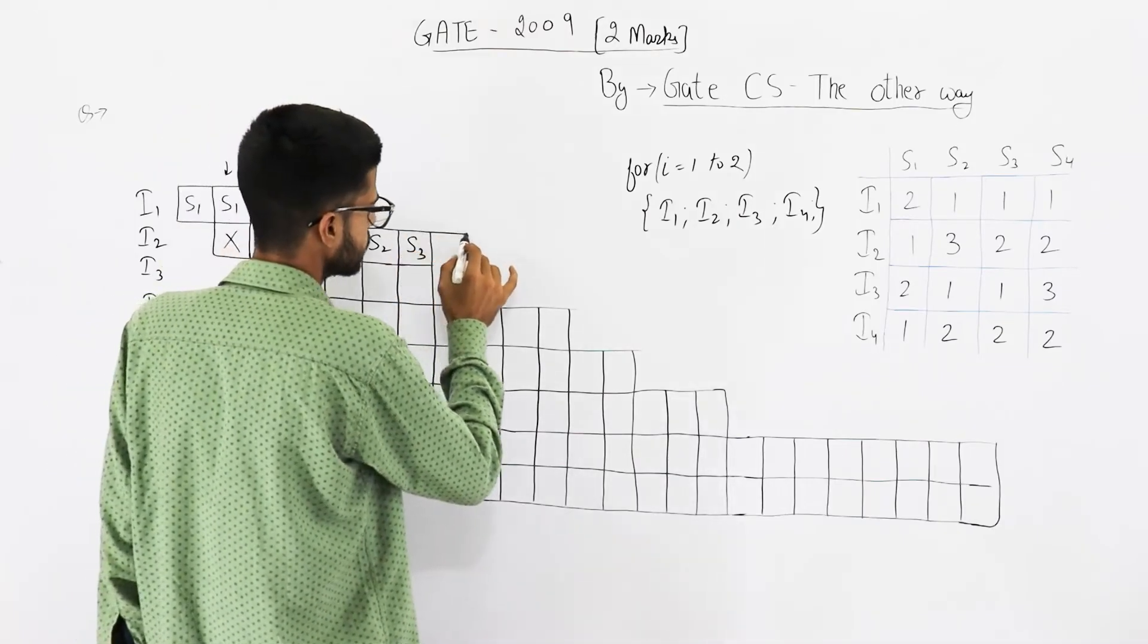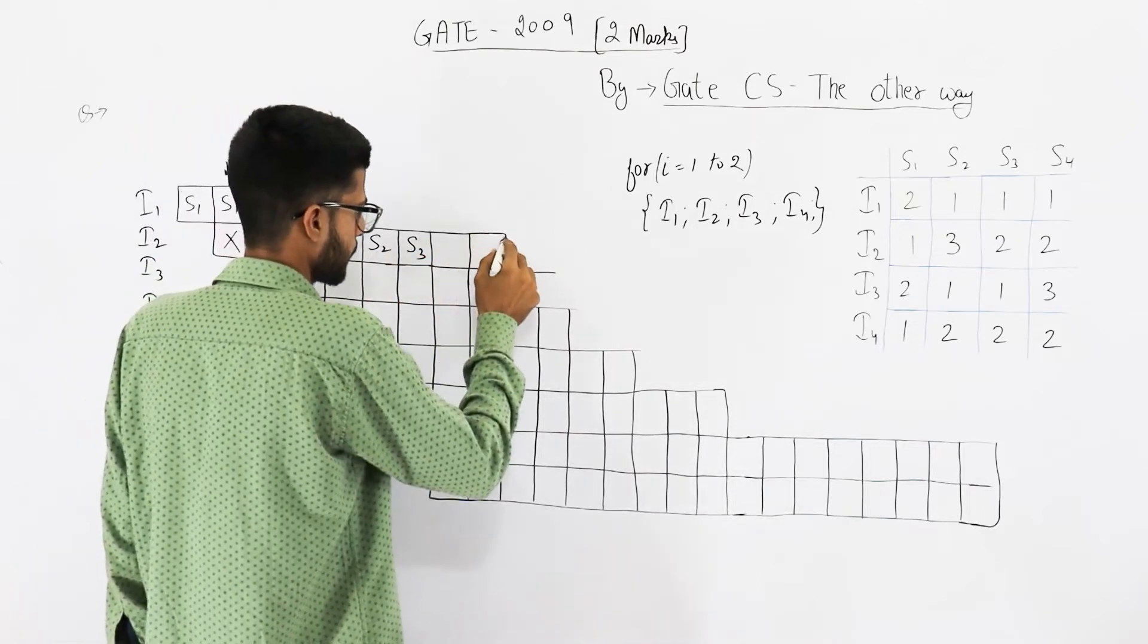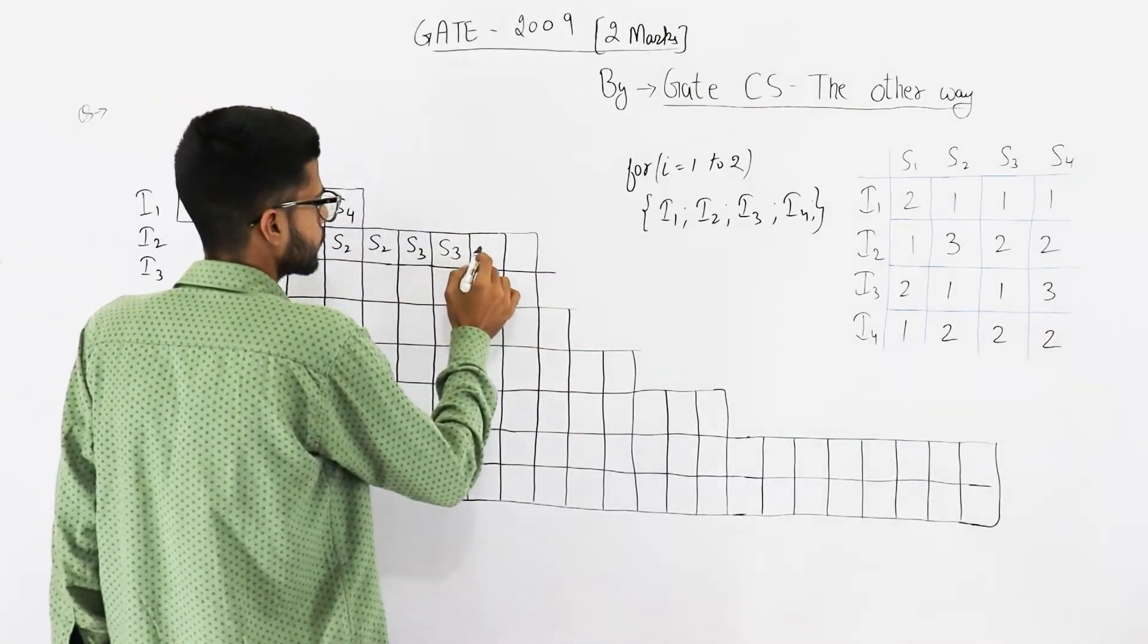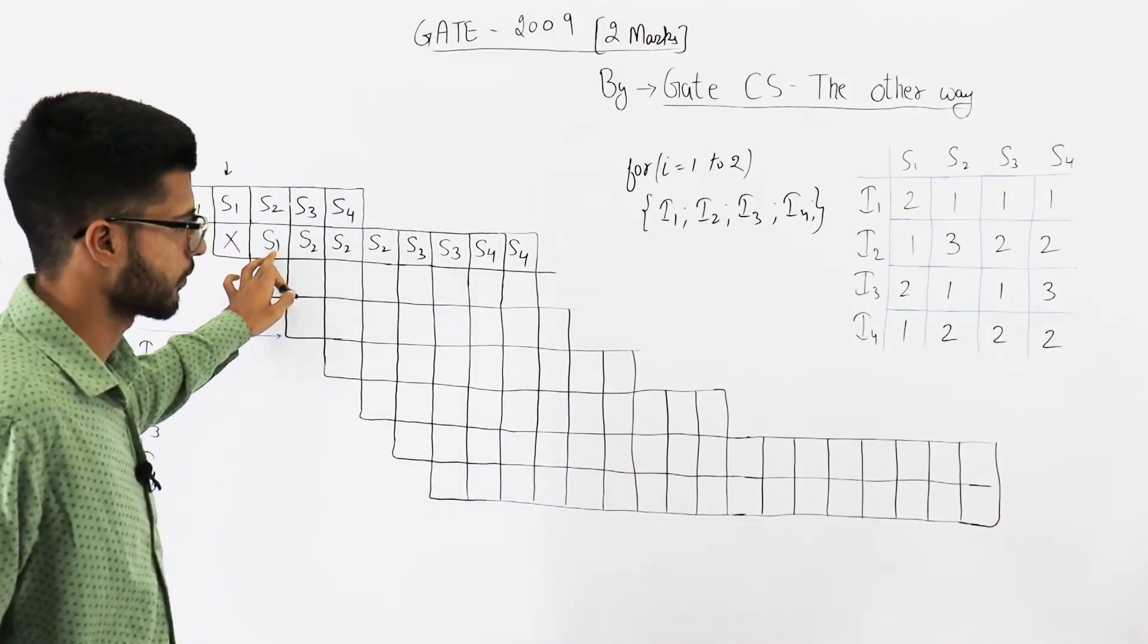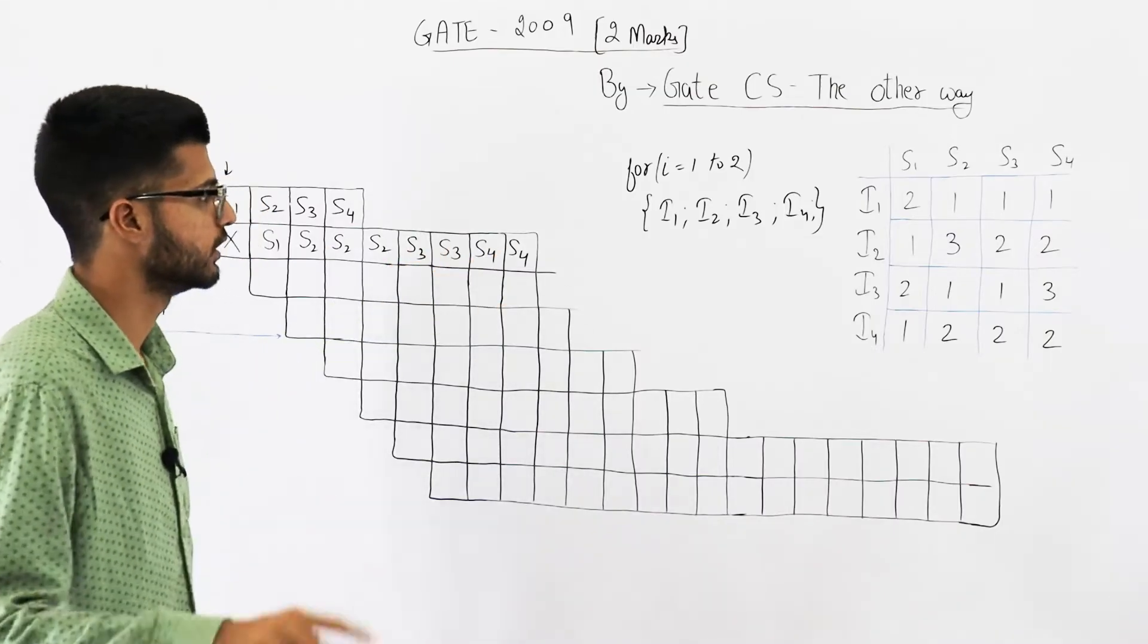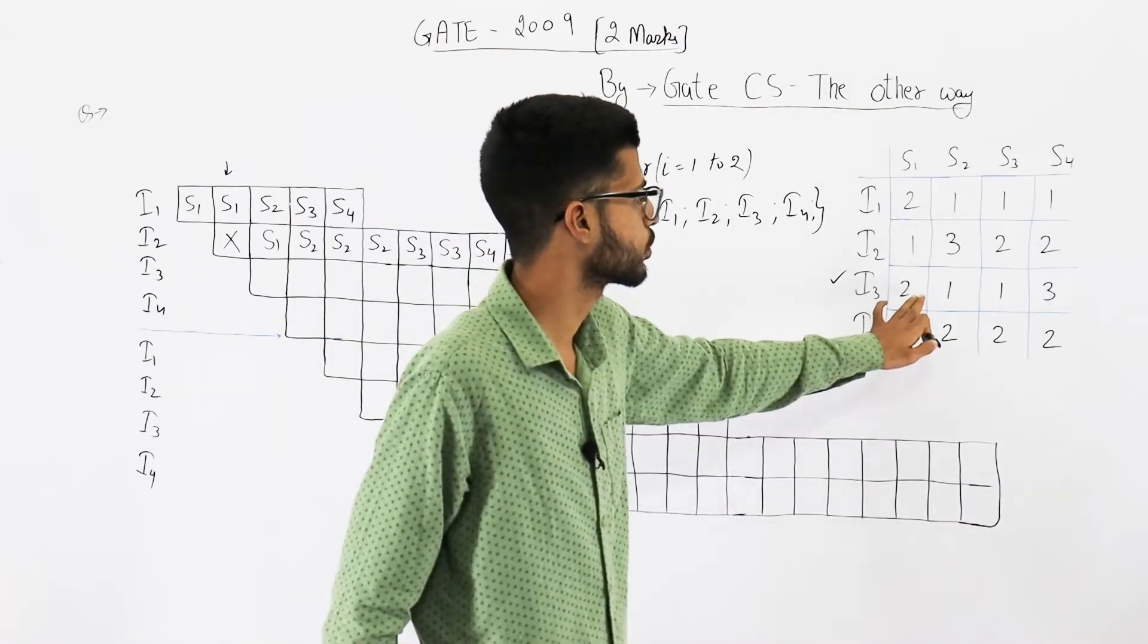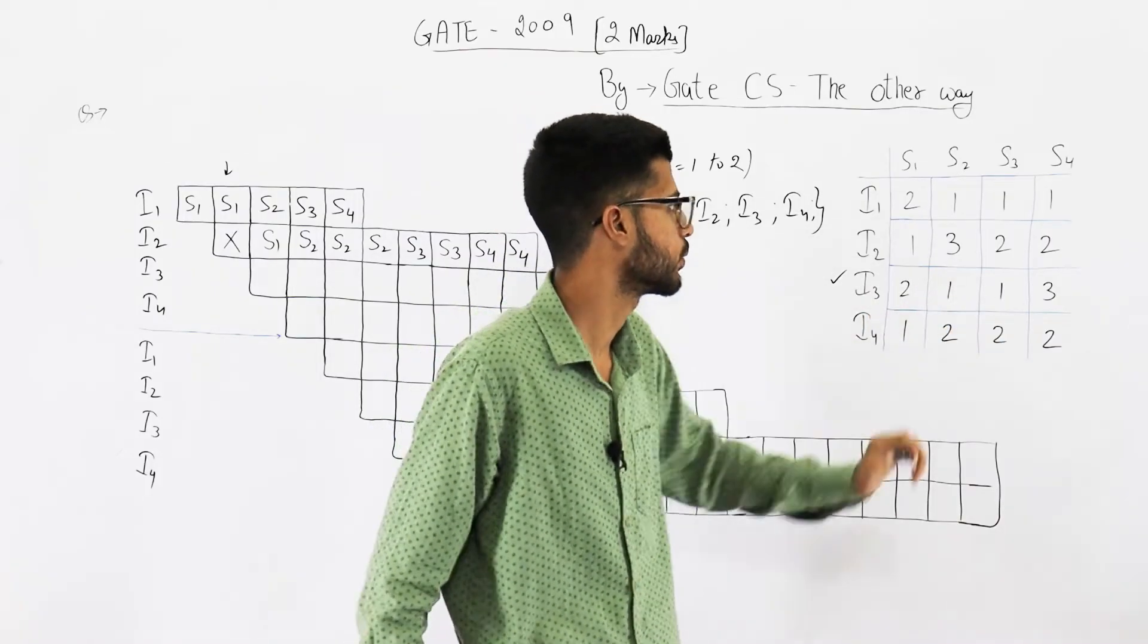Three clock cycles of s2, and then s3 and s4 are two each. Let me draw this diagram. One clock cycle of s1, three of s2, followed by s3 and s4 two each - two s3s, two s4s. Now let's see instruction i3. It requires two clock cycles of s1 followed by one s2 and one s3.